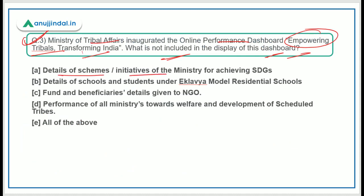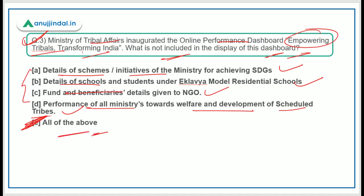The question asks which of the following is not included in the dashboard. Checking the options: details of schemes or initiatives — Yes, included; details of schools and students under Eklavya Model Residential Schools — Yes; funds and beneficiaries details given to NGOs — Yes; performance of all ministries towards welfare of STs — Yes. All of these are included, so the answer is Option E: All of the above are included.